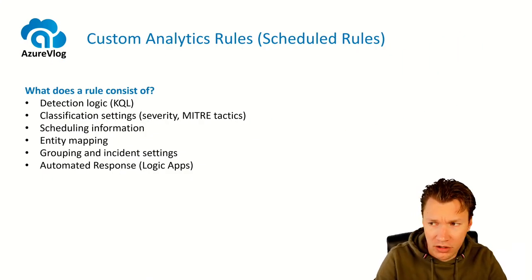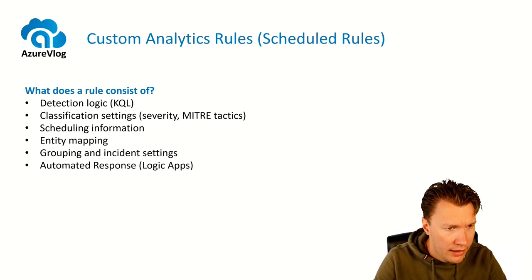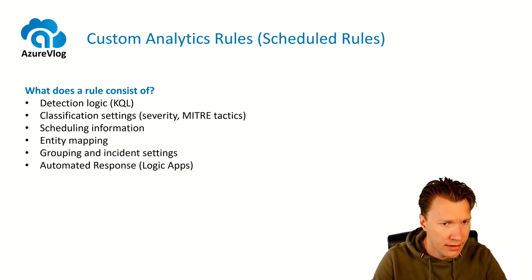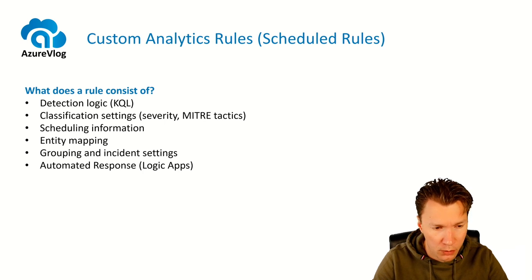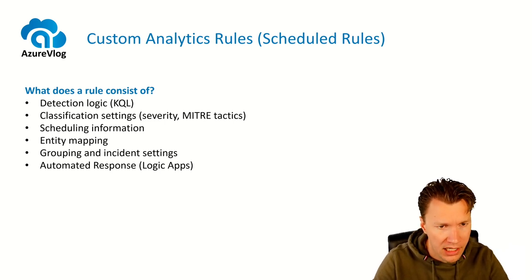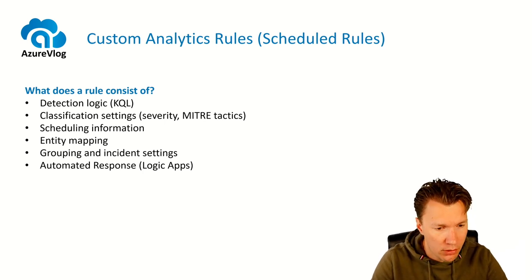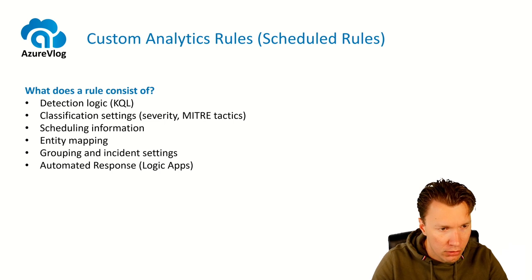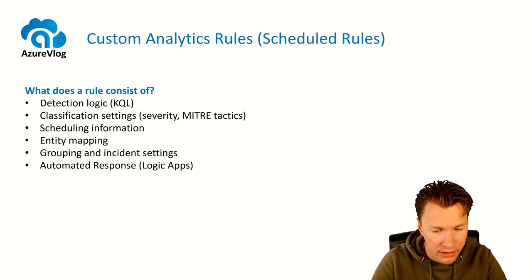We also have scheduled rules — basically custom analytics rules where you can define all logic yourself. A scheduled analytics rule consists of several components. First, the detection logic. Second, the classification settings: you can set a severity and the MITRE tactics visible when the rule triggers an alert. Third, scheduling information — Azure Sentinel is a query-based SIEM, meaning that at a certain interval we run some alert logic, and based on that logic we generate incidents. So as part of your analytics rule, you have to define the scheduling information.